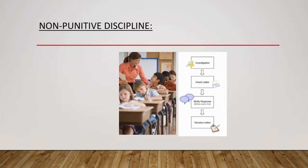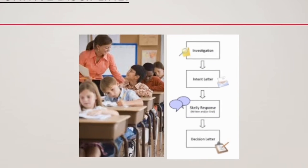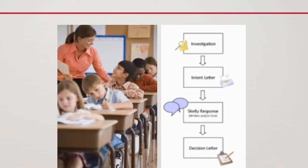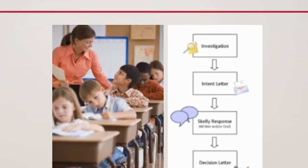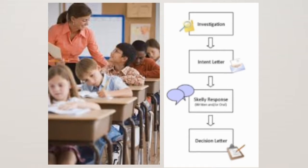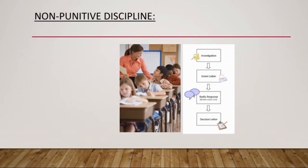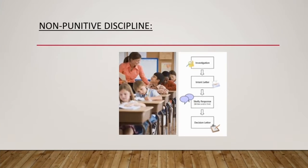In non-punitive discipline, a student is not punished — they are taught discipline without punishment. For example, if a student is not performing well, an investigation is done and then a letter is sent to their home, or the student is told directly where they need improvement.